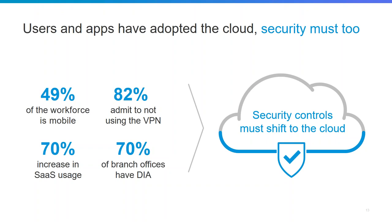Over the next few years, there's a 70% increase in SaaS usage as well. With branches now doing direct internet access, how are we securing our connection, applying relevant policies to control what we have access to, and making sure we're not accessing malicious threat actors' domains or infrastructure?